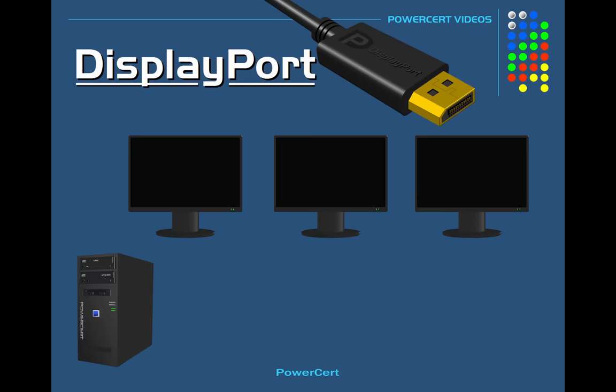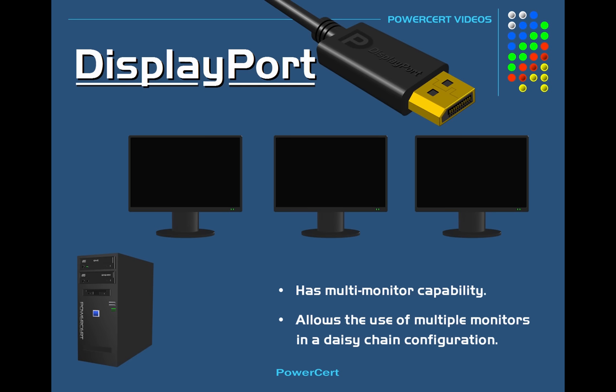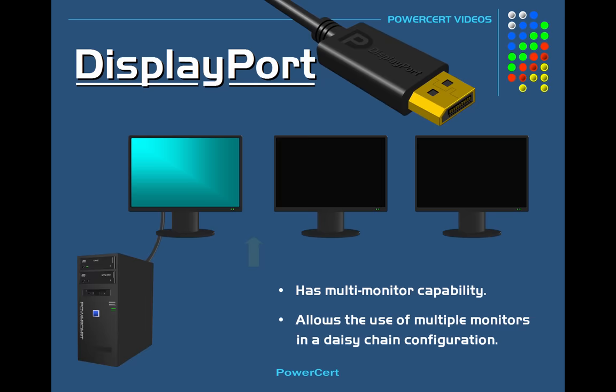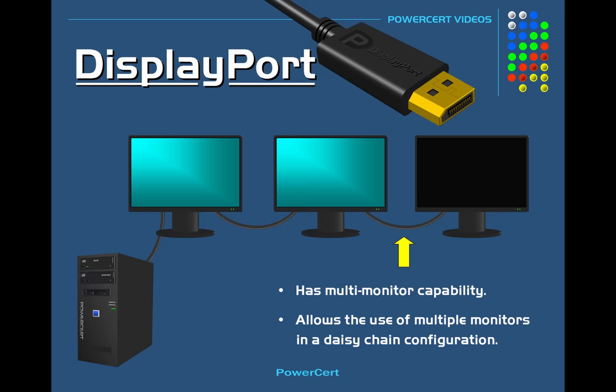One of the main advantages that DisplayPort has over HDMI is its multi-monitor capabilities. DisplayPort allows you to use multiple monitors by connecting them in a daisy chain configuration. For example, if you wanted to use three monitors, you would connect a cable from the DisplayPort on your computer to the first monitor, then the first monitor connects directly to the second, and the second to the third. This way you have three working monitors while using only one DisplayPort on your computer.